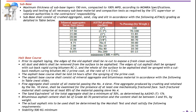Number seven: bituminous asphalt cement shall be of grades 60 up to 70 and the content shall be between 3 to 5% by weight. Number eight: the actual asphalt mix to be used shall be determined by the Marshall test and shall satisfy the following requirements. Number nine: stability — 500 kg minimum for all base course.